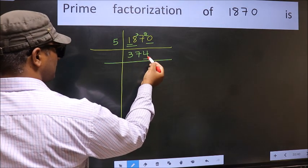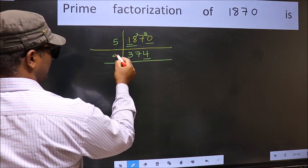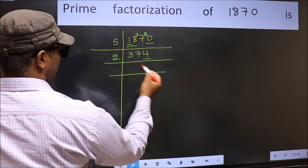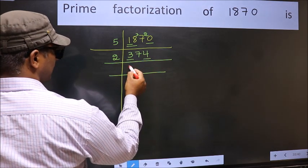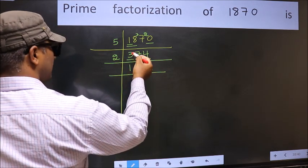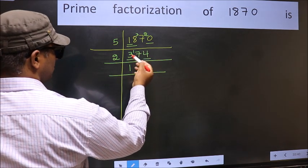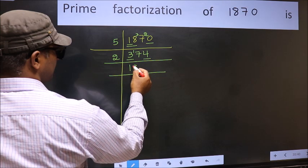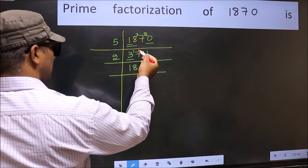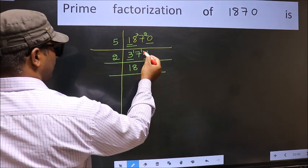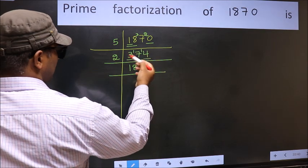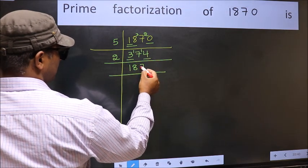Now the last digit 4 is even, so take 2. First number 3, a number close to 3 in 2 table is 2×1 = 2. 3 minus 2 = 1, 1 carried forward, 17. A number close to 17 in 2 table is 2×8 = 16. 17 minus 16 = 1, 1 carried forward, 14. When do we get 14 in 2 table? 2×7 = 14.